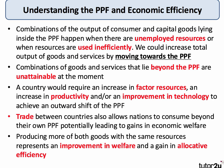A quick word on the PPF and economic efficiency. Any combination of consumer or capital goods and services that lies inside the PPF occurs when resources are either unemployed or being used inefficiently. Combinations outside the PPF are unattainable at present — to get there we'd need an increase in factor resources, higher efficiency, productivity, or improvements in technology. Trade between nations also potentially allows consumers to consume beyond the nation's own PPF, improving economic welfare — a gain in allocative efficiency.